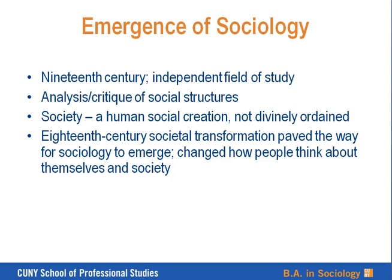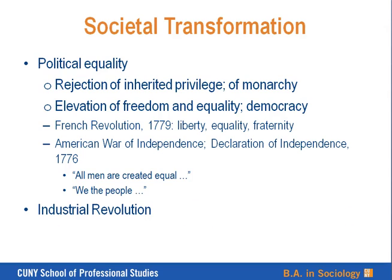Sociology emerged in the 19th century as an independent field of study with analysis and critique of social structures. The initial sociologists were, especially in Europe, largely focused on society as a whole — that is, society as a human creation, only recently emerging from a view of social arrangements as divinely ordained. In the 18th century, societal transformation paved the way for sociology to emerge, changing how people think about themselves and about society. Most of these transformations could be viewed under the umbrella of the emergence of political equality or democracy, and in the context of the Industrial Revolution, which resulted in a complete transformation of the class structure in Europe.